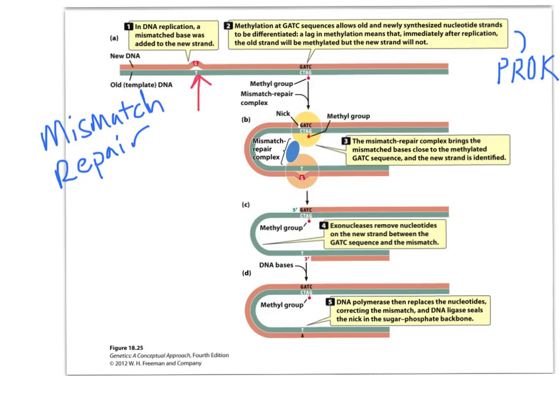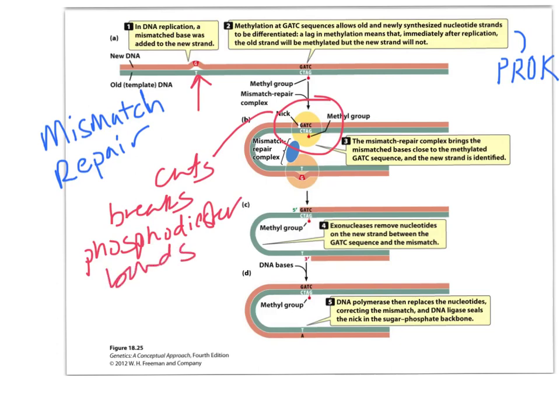The complex recognizes this and cuts, this word nick actually means cuts, breaks phosphodiester bonds. So cuts those apart. And they call that a nick because it's in one strand, it's only on the new strand, it's not on the old strand or the template strand. And exonuclease chews that away. So all of this disappears, that new strand from here, to where that mismatch is.